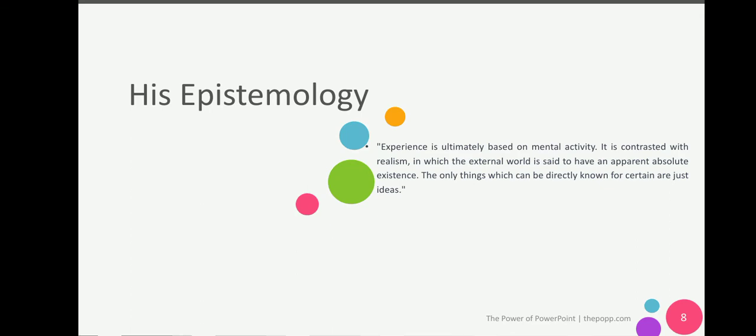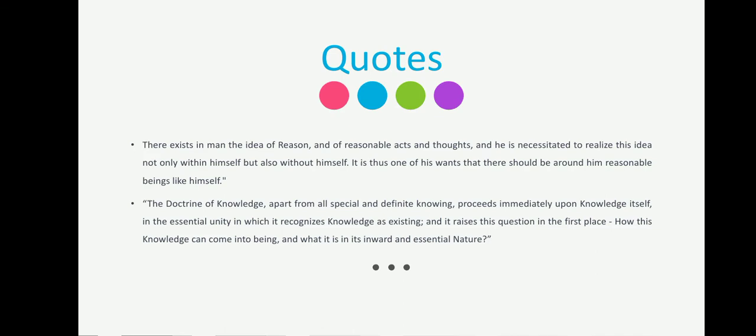Experience is ultimately based on mental activity. It is contrasted with realism, in which the external world is said to have an apparent absolute existence and the only thing which can be directly known for certain are just ideas. This is where reasoning comes in. Let's end with this quote: There exists in man the idea of reason and reasonable acts and thoughts, and he is initiated to realize this idea not only within himself but also without himself, and thus one of you wants there should be around him reasonable beings like himself. The doctrine of knowledge, apart from all special and definite knowing, proceeds immediately upon knowing about knowledge itself in the essential unity in which it recognizes knowledge as existing, and it raises the question: how can this knowledge come into being and what is inward and essential in nature? This is the use of our doctrine of knowledge, the use of reason, that essential unity that we recognize as knowledge existing.